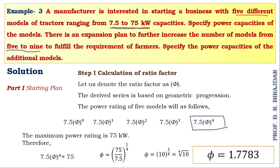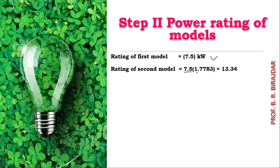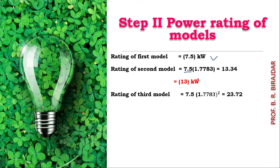Step two: we calculate the power ratings of the five models. The first model is 7.5 kilowatt as given. For the second model, we multiply the first model by the ratio factor: 7.5 × 1.7783 = 13.34, which we round off to 13 kilowatt. For the third model, we multiply the second model by 1.7783, giving 7.5 × 1.7783² = 23.72.